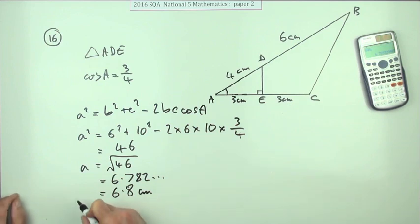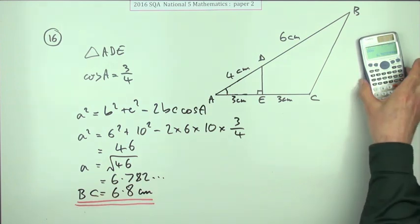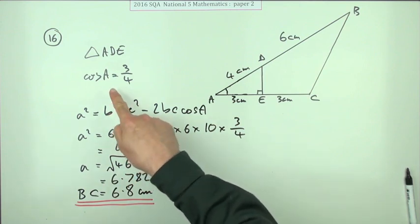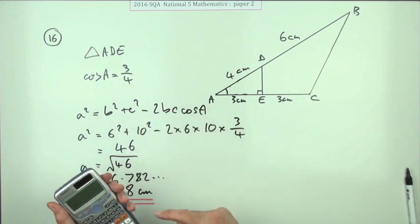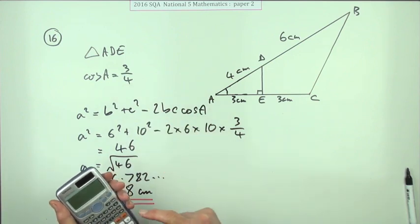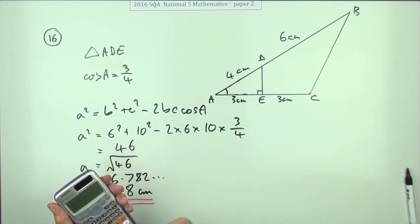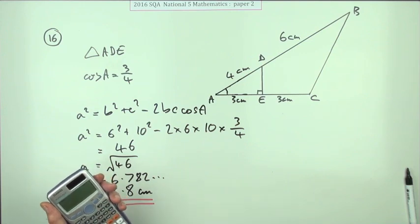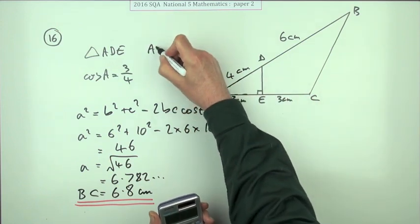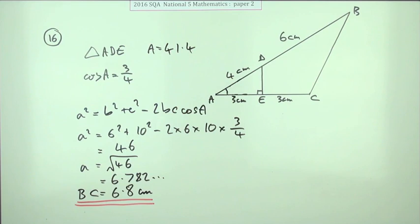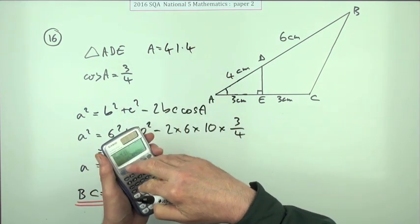Of course, if you did go ahead and work out that angle and then put it in here, that angle would have been inverse cos of 3 quarters, which would have been 41.4 degrees. Just as a matter of interest - if you used that, you would have found the same result because it would have been hidden inside the gubbins of your calculator.